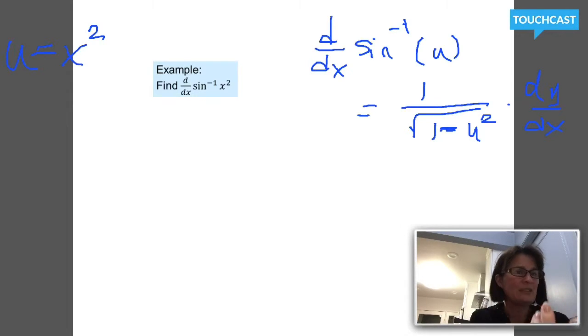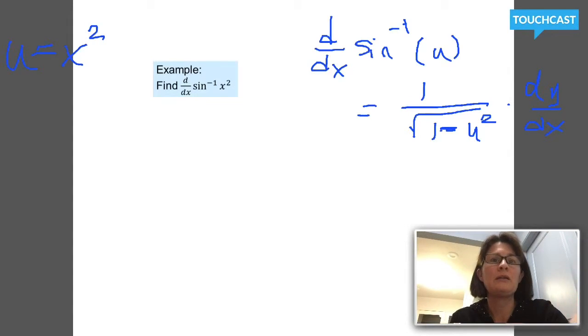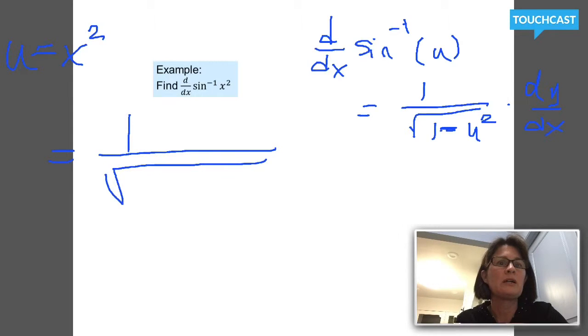Now I know u equals x squared. How do I find the derivative of the inverse sine of something? It's going to be d/dx of inverse sine of x squared. I copied the formula down from your notes paper, so it's a good time to check and make sure you wrote the same thing that I have. Yours is probably more legible.